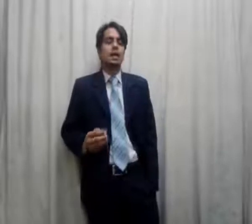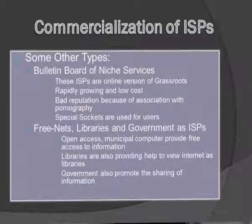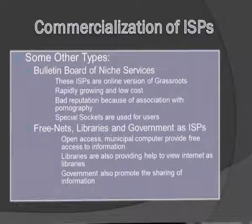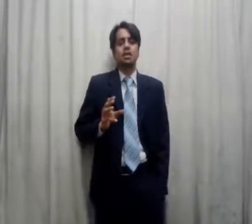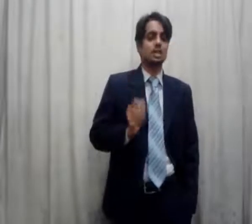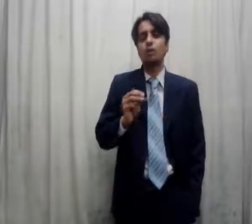Let's talk about some other types of ISPs. Number one is the bulletin board niche market. Normally, these ISPs are used for small groups and provide a grassroot platform for different small groups to communicate with each other. The bulletin board ISP has a bad reputation because mostly this type of ISP is used in pornography.